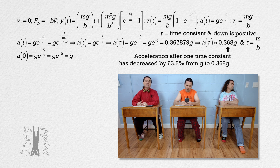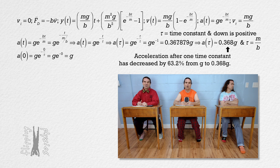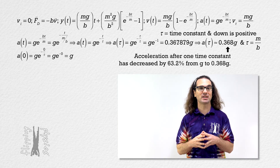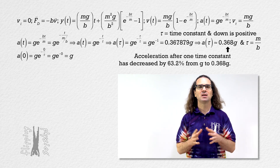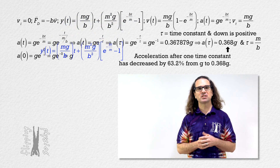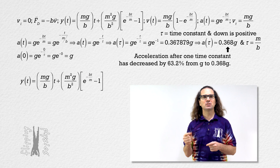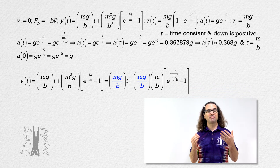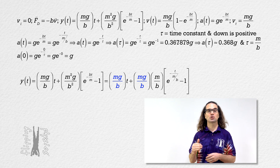During one time constant, the acceleration of the ball has decreased from the acceleration due to gravity to 0.368 times the acceleration due to gravity. In other words, the acceleration of the ball has decreased by 63.2%, because that is what the time constant represents — a change of 63.2%. As I said, 0.632 is going to come up a lot when it comes to the time constant. Now let's look at the y position as a function of time equation. You can see that we can isolate out mass times acceleration due to gravity divided by proportionality constant, or terminal velocity.